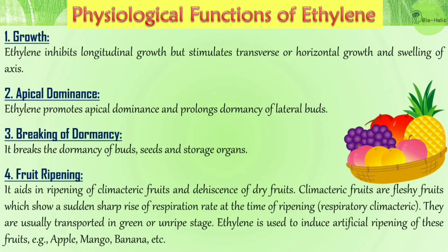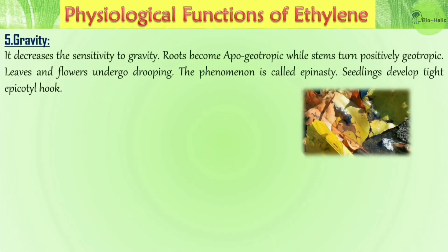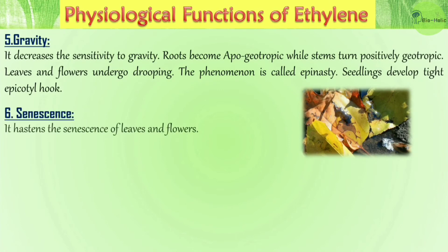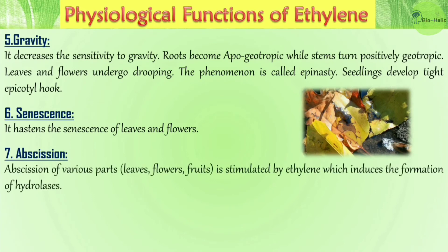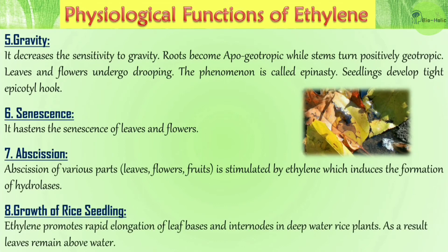Climacteric fruits are fleshy fruits that show a sudden sharp rise in respiration rate at the time of ripening, known as the respiratory climacteric. They are usually transported in green or unripe states, and ethylene is used to induce artificial ripening — for example in apple, mango, and banana. Ethylene decreases sensitivity to gravity, making roots apogeotropic while stems become positively geotropic. Leaves and flowers undergo drooping, a phenomenon called epinasty. Seedlings develop a tight epicotyl hook. Ethylene also hastens the senescence of leaves and flowers and stimulates abscission, inducing formation of hydrolytic enzymes. It also promotes rapid elongation of leaf bases and internodes in deep-water rice plants, keeping leaves above water.